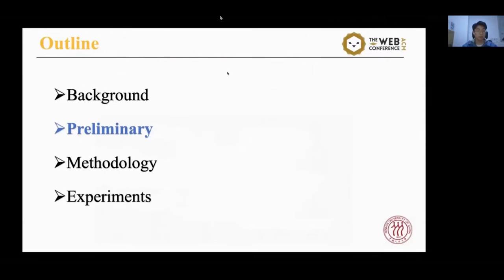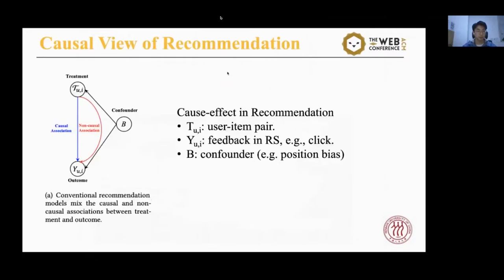I'm going to introduce some preliminaries. We formulize the cause-effect in recommendation using this causal graph. Treatment T_UI denotes the user-item pair, that is, user U and item I. Outcome Y_UI denotes the feedback in recommender system, that is, click. Confounder B denotes confounding factors, for example, position bias. Conventional recommender systems assume that there exists only a causal relationship between treatment and outcome, which is the blue arrow in the figure. In fact, confounders lead to a non-causal relationship, which is the red arrow.